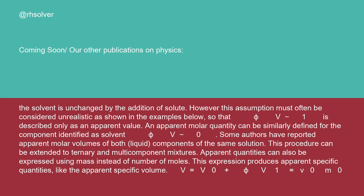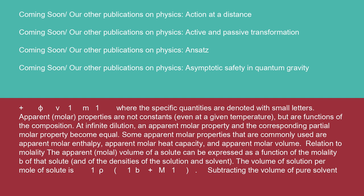An apparent molar quantity can be similarly defined for the component identified as solvent, φV₀. Some authors have reported apparent molar volumes of both liquid components of the same solution. This procedure can be extended to ternary and multi-component mixtures. Apparent quantities can also be expressed using mass instead of number of moles, producing apparent specific quantities like the apparent specific volume. Apparent molar properties are not constants, even at a given temperature, but are functions of the composition.